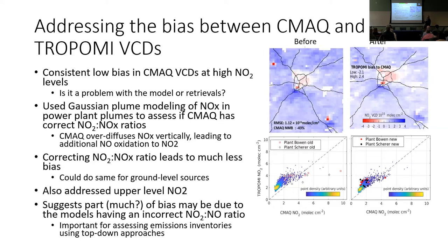We also integrated recent field measurements that can help explain the opposite bias more regionally where there are few emissions. Taking those two factors into account, you get improved agreement between the two. The airport, which is a high NOx emitter, still shows a bias because we haven't addressed the NO to NO2 ratio issue — or it could very possibly be that we are underestimating the emissions from airports, which has important policy concerns.